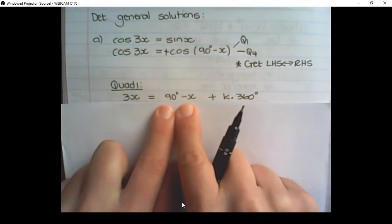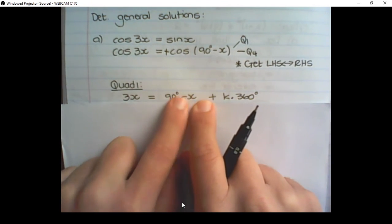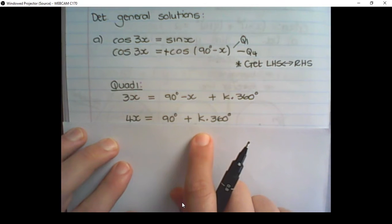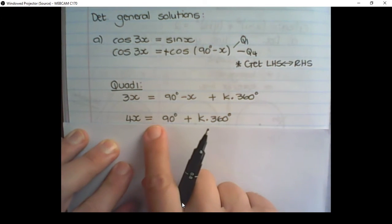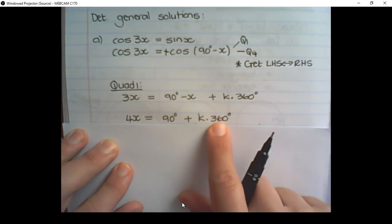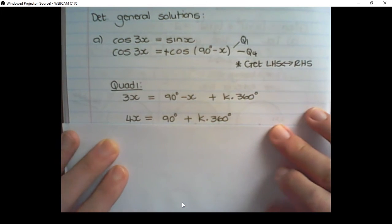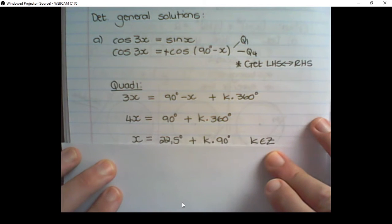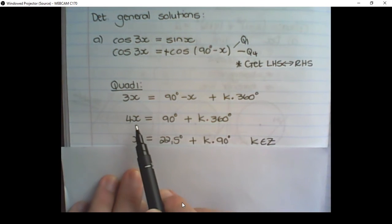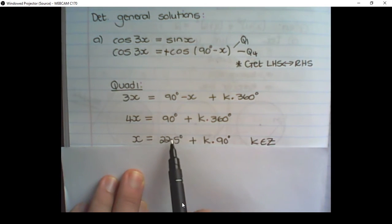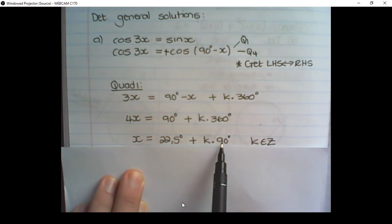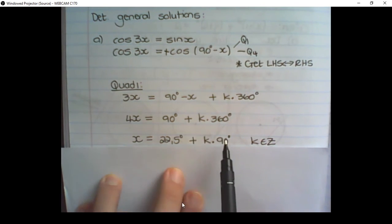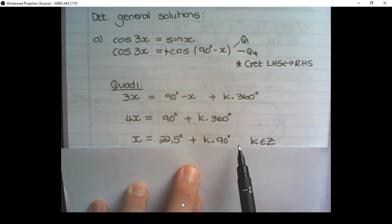We are using quadrant 1 because cos is positive in quadrant 1. We simply simplify by bringing the x over to one side, so we have 4x equals to 90° plus k times 360. Then we divide everywhere by 4: x equals 22.5°, and 360 divided by 4 is 90. So x equals 22.5° plus k times 90°, where k must be an integer.